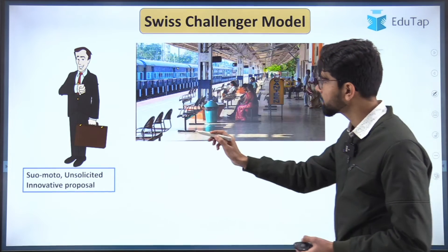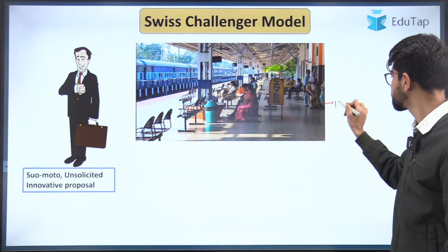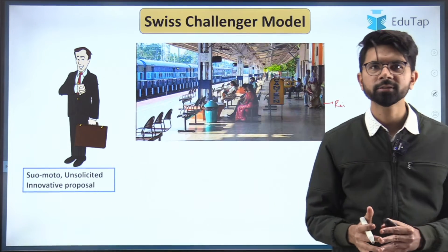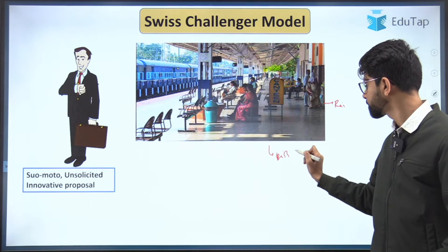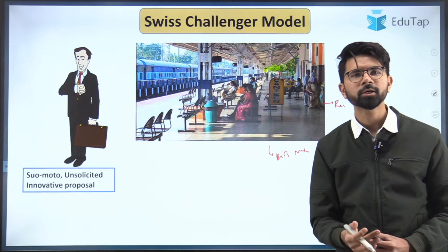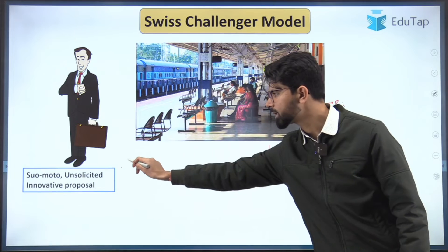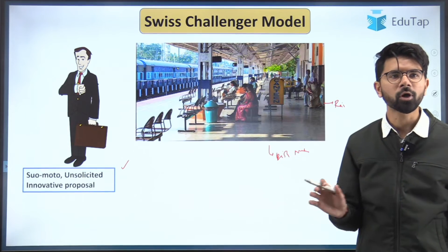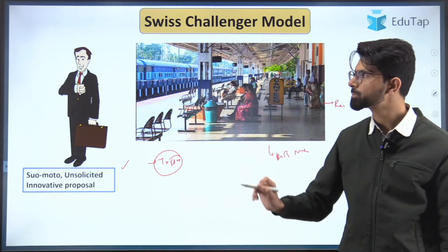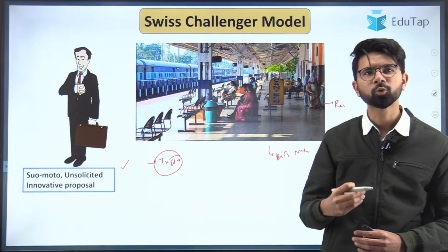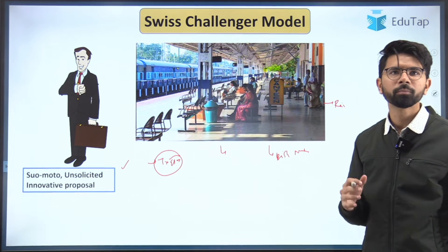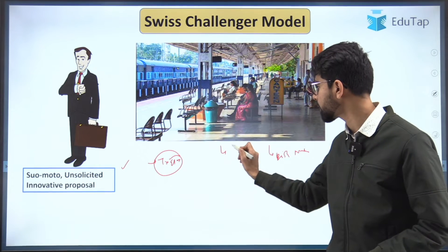For example, this particular businessman thinks that in railway stations, during the waiting period for passengers, TVs or a dish network could be set up to showcase skill development programs, leading to the enhancement of the skill sets of individuals. This is a model that has been proposed by this businessman and is not the result of any public trigger — it is purely his idea, which he takes to the public entity.